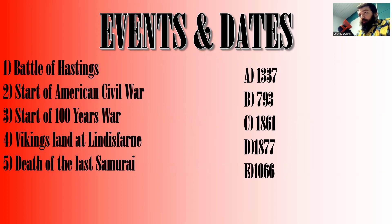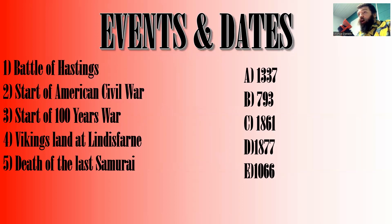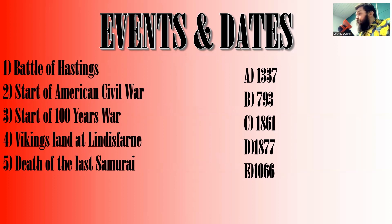Events and Dates: event one is the Battle of Hastings, event two is the start of the American Civil War, event three is the start of the Hundred Years' War, event four is the Vikings landing at Lindisfarne, and event five is the death of the last samurai. The dates are: A — 1337, B — 793, C — 1861, D — 1877, and E — 1066. You have a minute starting now.